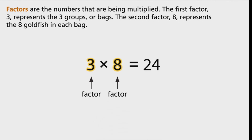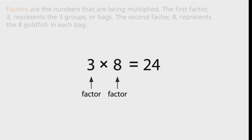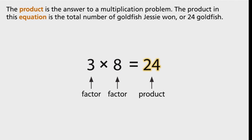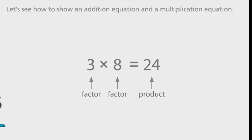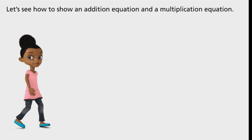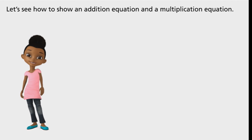The product is the answer to a multiplication problem. The product in this equation is the total number of goldfish Jesse won, or 24 goldfish. Let's see how to show an addition equation and a multiplication equation.